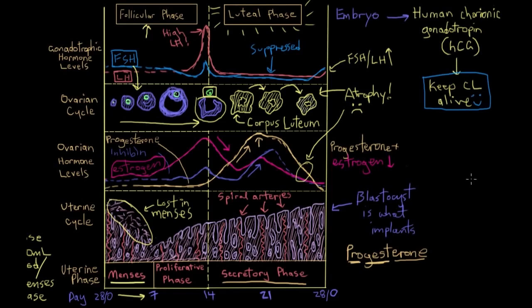Second, the corpus luteum doesn't produce progesterone for the entirety of the pregnancy. It does most of the progesterone production for about the first two to three months. After that, a joint organ of exchange shared between the mother and the fetus, called the placenta, starts to take over as the major producer of progesterone.